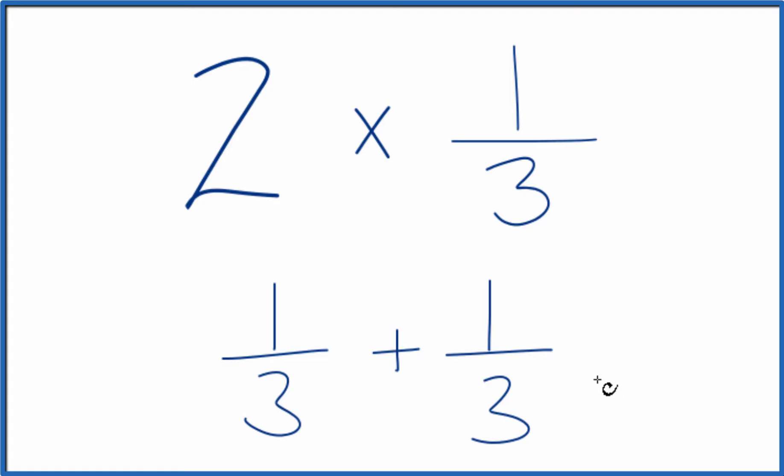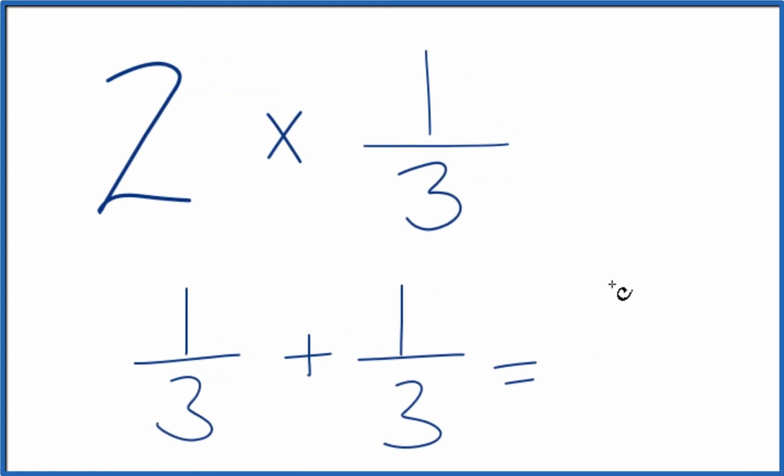We have the same denominator, so when we add them, we get two-thirds. So that's one way to do it. Two times one-third is two-thirds.